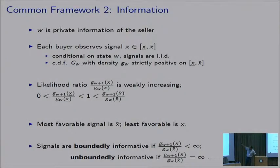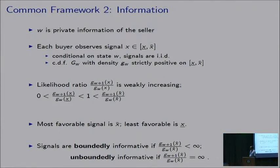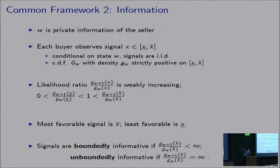The state W is the private information of the seller. Each buyer observes a signal X from the interval [X_lower, X_upper]. Conditional on state W, signals are IID with distribution function G_W and density g_W, strictly positive on the interval. The likelihood ratio is weakly increasing, so the most favorable signal most indicative of high quality is X_upper and the least favorable is X_lower. Signals are boundedly informative if the likelihood ratio at the top is finite, and unboundedly informative if it is infinite — meaning some signals exceedingly distinguish state W plus one from state W.